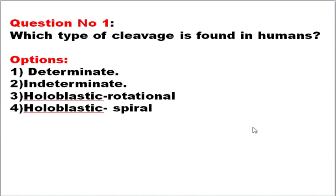The first question is from developmental biology: which type of cleavage is found in humans or mammals? The correct answer is holoblastic rotational cleavage. You can find this in developmental biology — in the tabulated column of that book alone, studying that particular table will help you score four marks, because at least one question will be asked from the cleavage unit. Please refer to Gilbert's book for developmental biology.